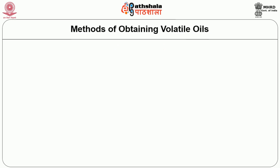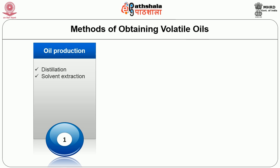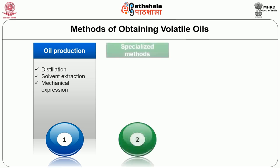The methods of obtaining volatile oils mainly depend upon the condition of the plant materials. Oil production can be divided into 3 major ways: first is distillation, second is solvent extraction, and third is mechanical expression.